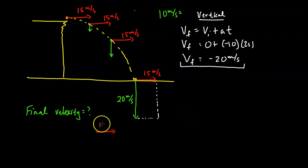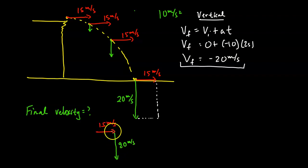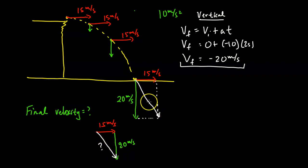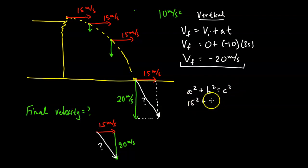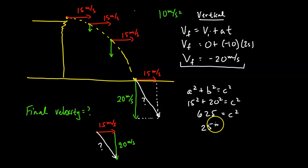Using the tip-to-tail method, I place the 15 meters per second horizontal vector and the 20 meters per second vertical vector, then draw the resultant diagonal vector. Using the Pythagorean theorem: a squared plus b squared equals c squared, so 15 squared plus 20 squared equals c squared. That gives 225 plus 400 equals 625, so c equals 25 meters per second.